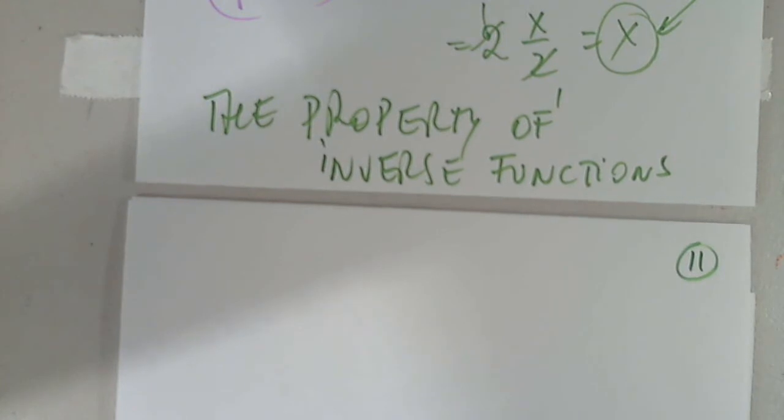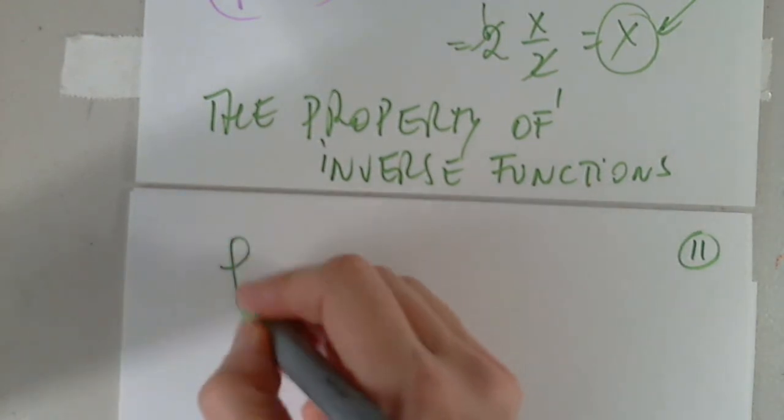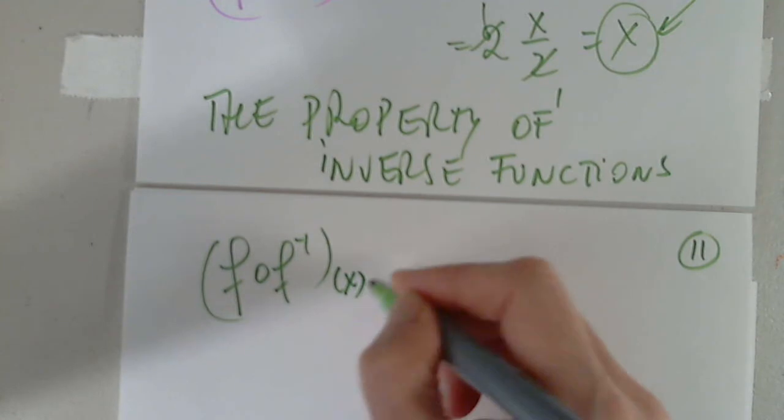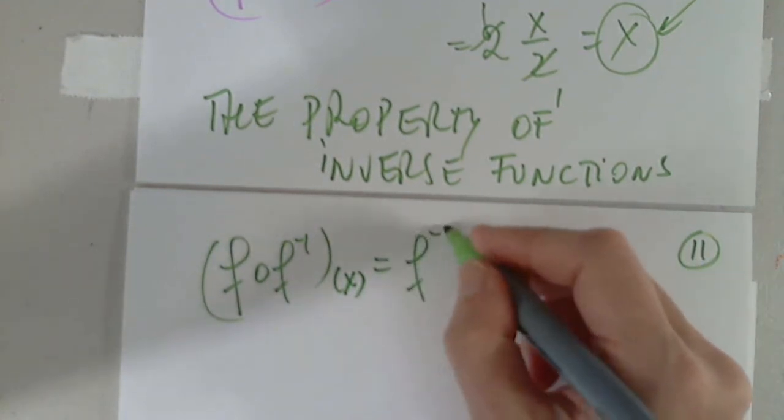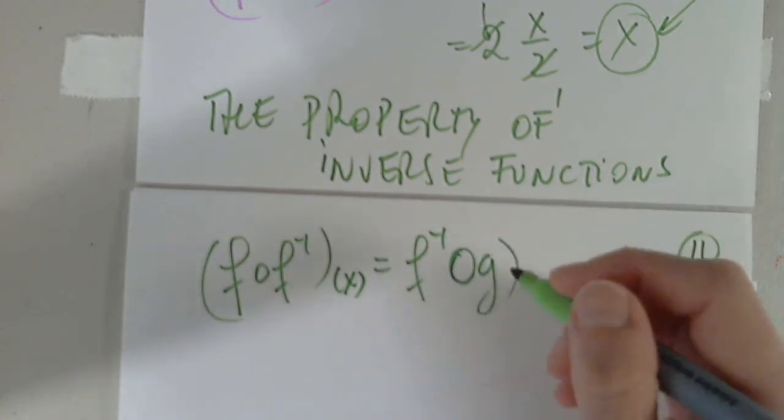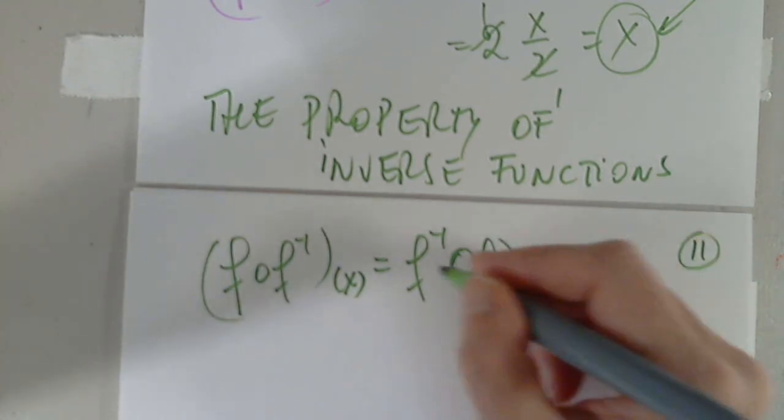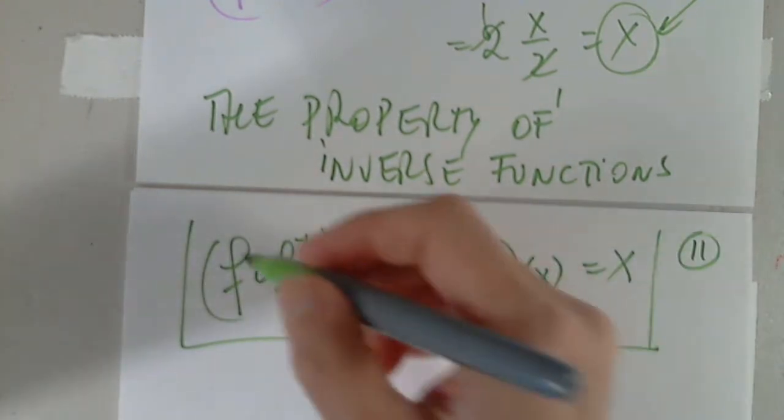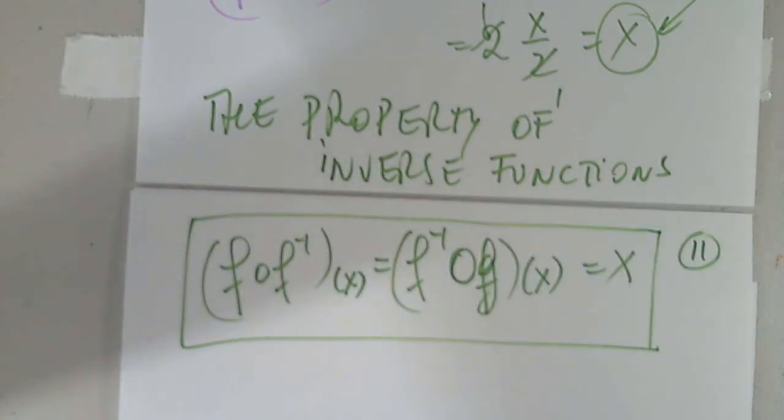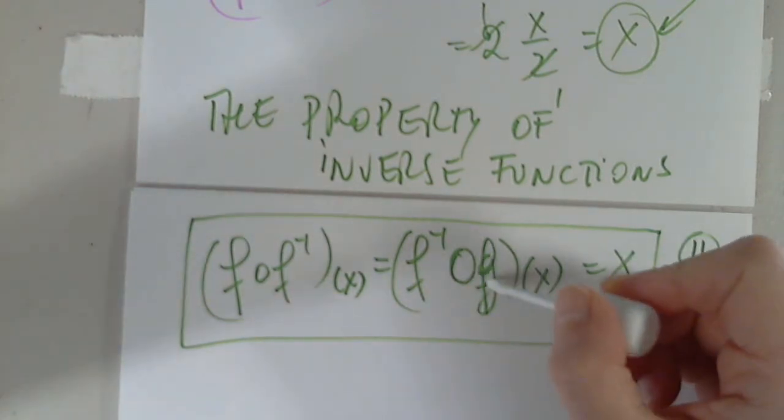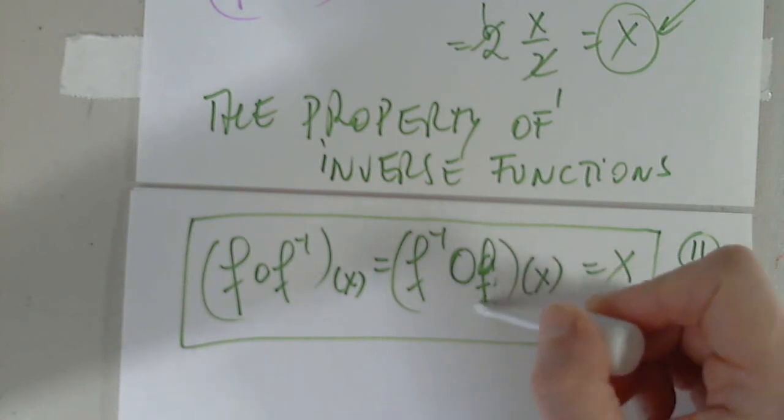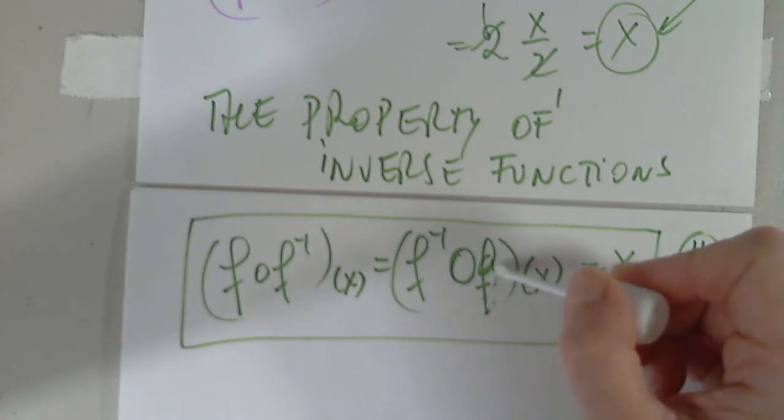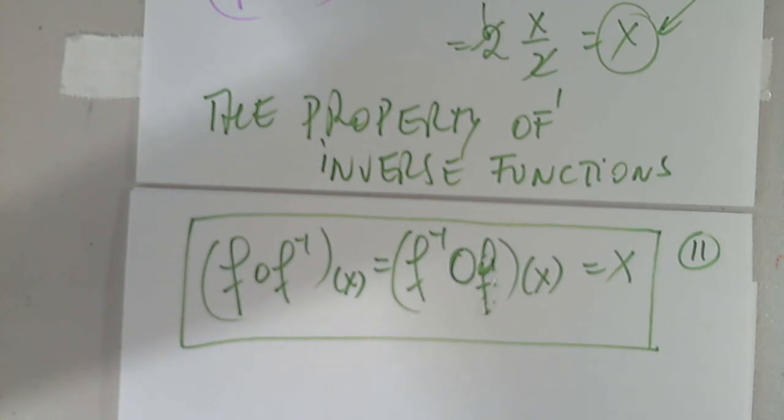So we checked. Indeed, those two functions were inverses of each other. So f comp f inverse, as well as f inverse comp f, equals x. This is the property of inverse functions. In other words, f comp f inverse, or f inverse comp f, have to equal x. Otherwise, the functions are not inverses of each other.